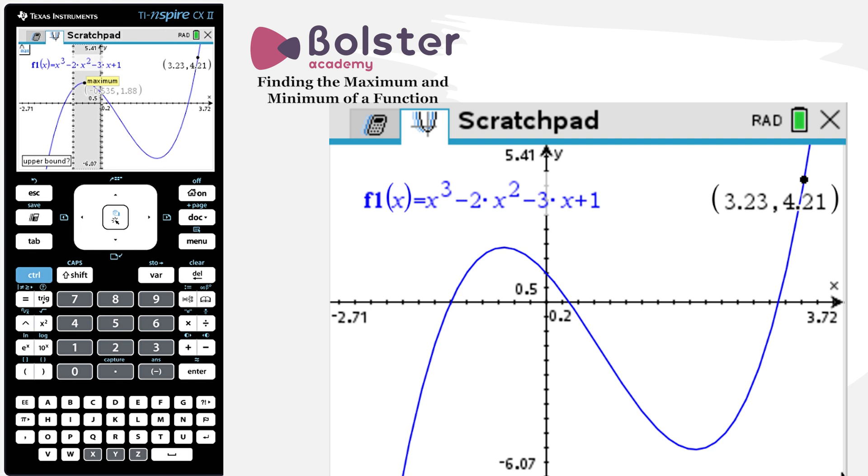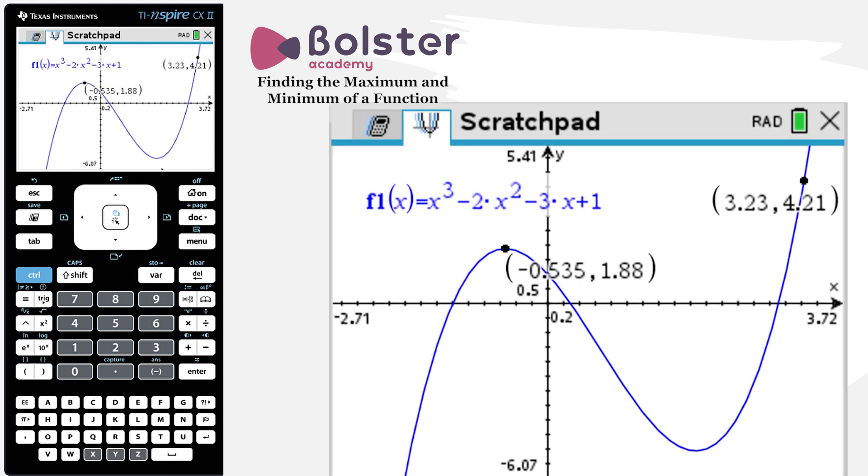And I can see that my local maximum point is at x equals minus 0.535, and the value of the function at that point is y equals 1.88. Now, obviously, both those numbers are to three significant figures.